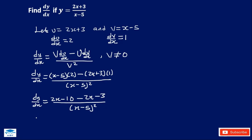So dy/dx is equal to: 2x minus 2x is 0, and negative 10 minus 3 is negative 13. So the answer is negative 13 over x minus 5 squared. This is our final answer.